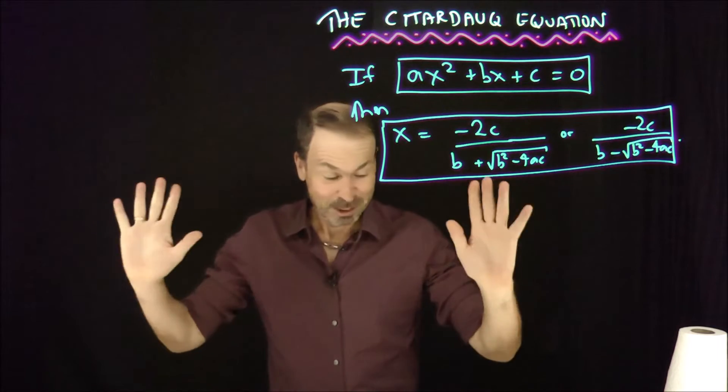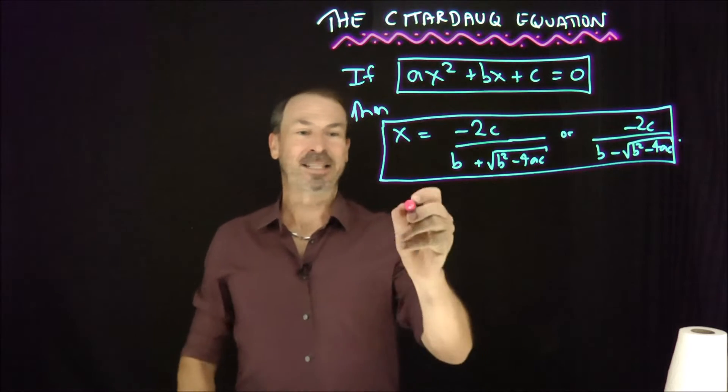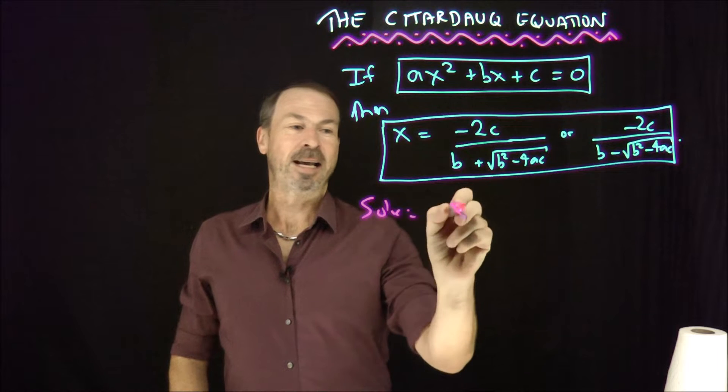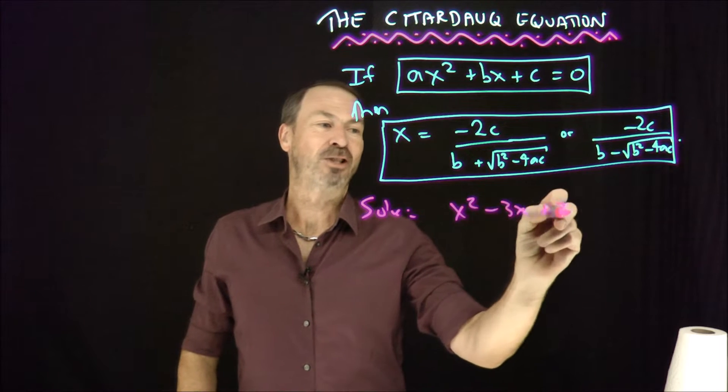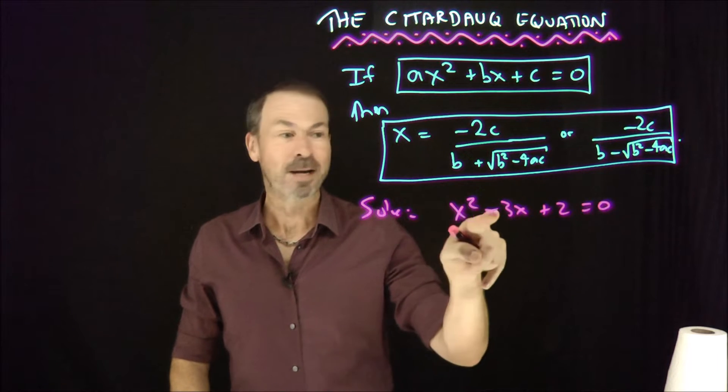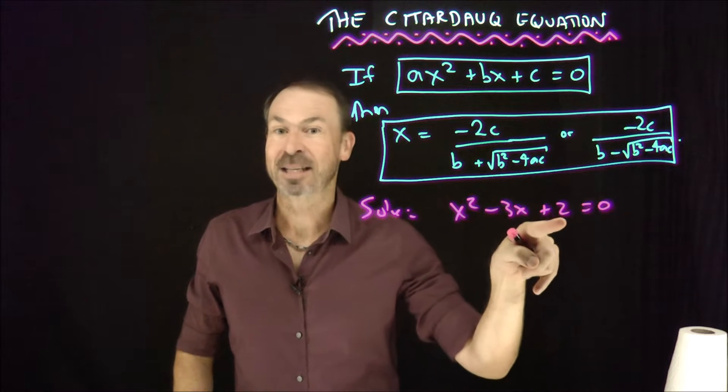Wow, very curious. Just to practice it, let's do an example. Let's solve, say, x² - 3x + 2 = 0. So a is 1, b is -3, and c is 2.